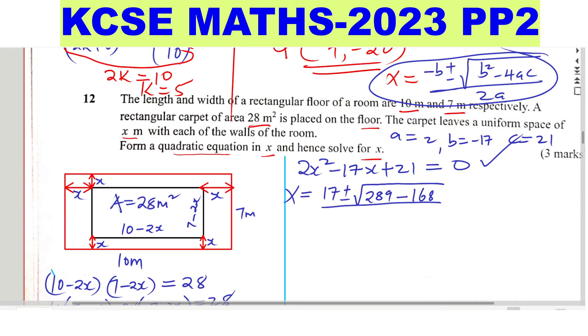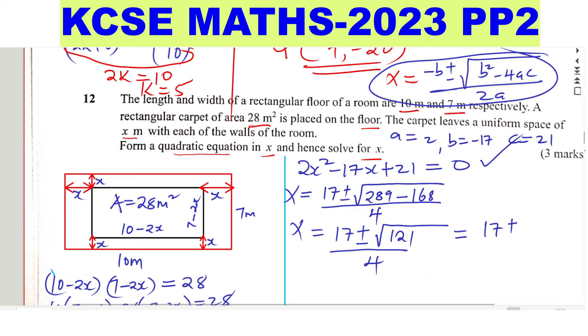Then everything divided by 2a, 2 times 2, which you get 4. So x will be 17 plus or minus, 289 minus 168 you get 121, divided by 4. And this will give 17 plus or minus, square root of 121 will be 11, divided by 4.